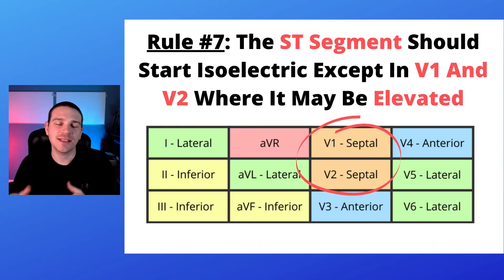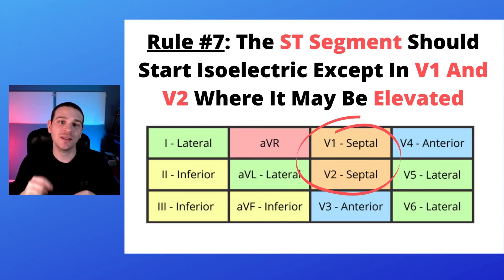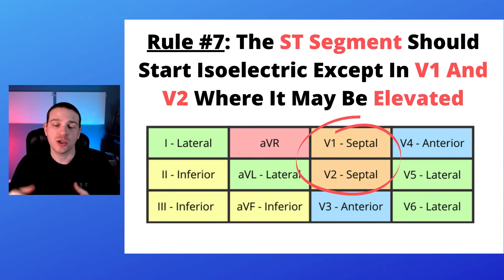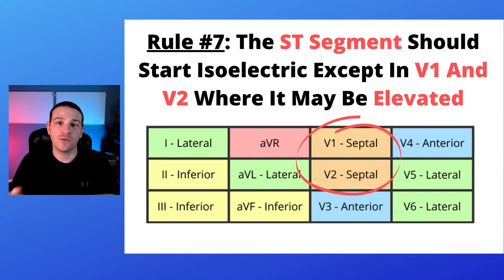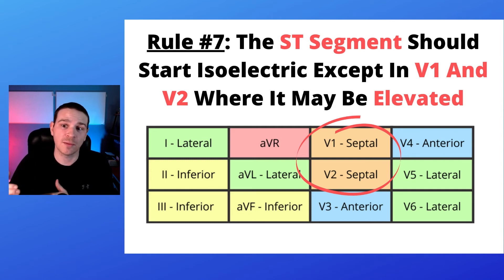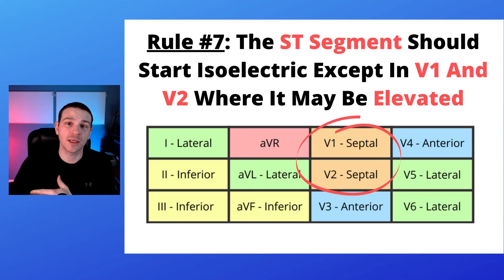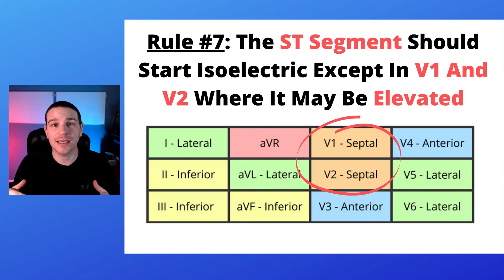Rule number seven: the ST segment should start at the isoelectric line, except in leads V1 and V2 where it may be elevated. For ST elevation in those leads, for age less than 40 it would be greater than 2.5 millimeters, age greater than 40 would be greater than two millimeters, and for women of all ages, greater than 1.5 millimeters.